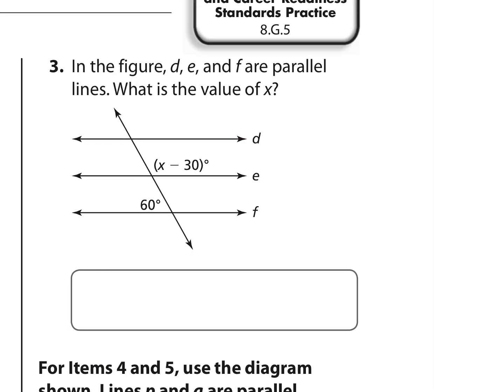Number three. In the figure, d, e, and f are parallel lines. What is the value of x? For one thing, we don't even have to use d. That's extra information. One thing I do notice is that this angle is obtuse. This angle is acute. They are not the same, but if I were to take this angle, 60 degrees, and move it up here, then I can see that these two add up to 180 degrees.